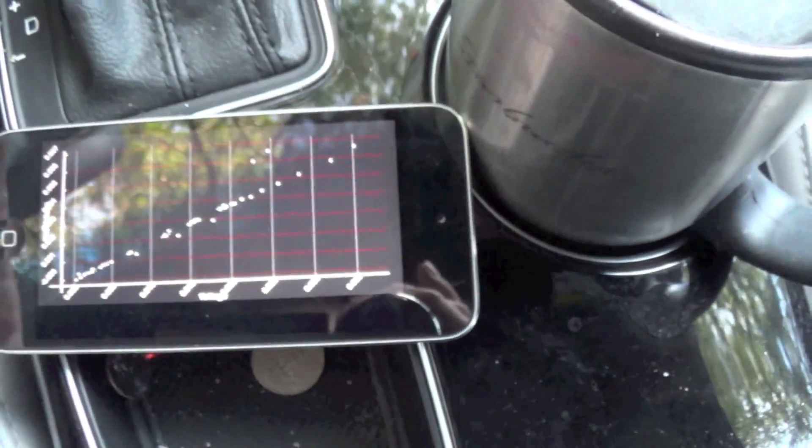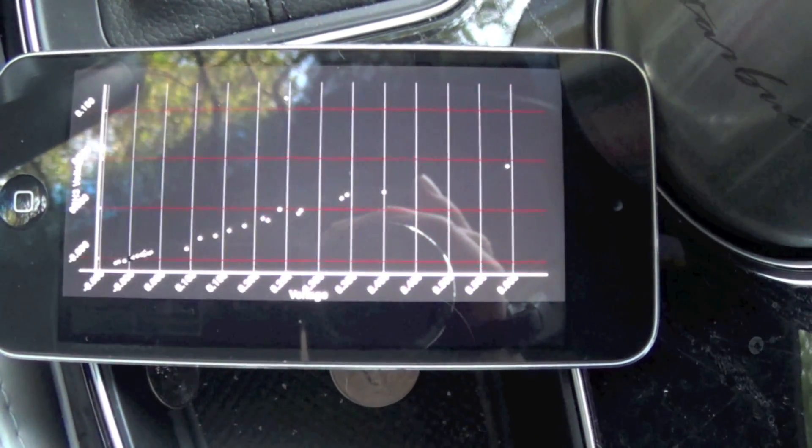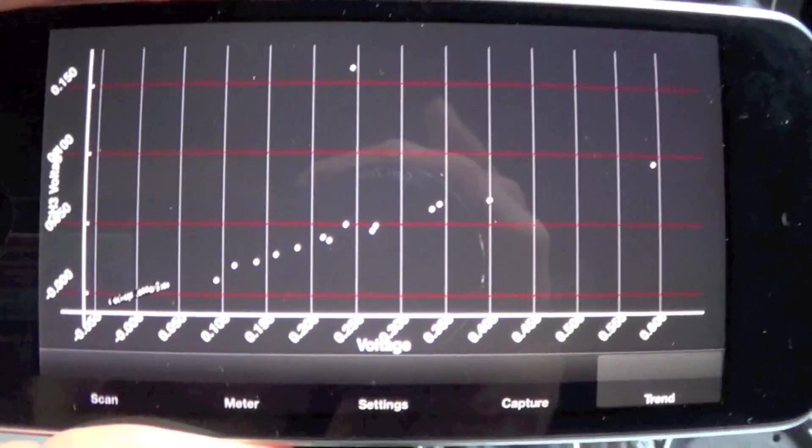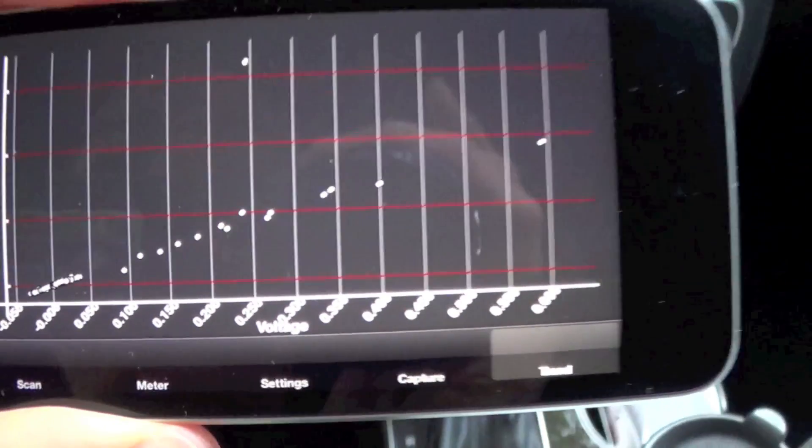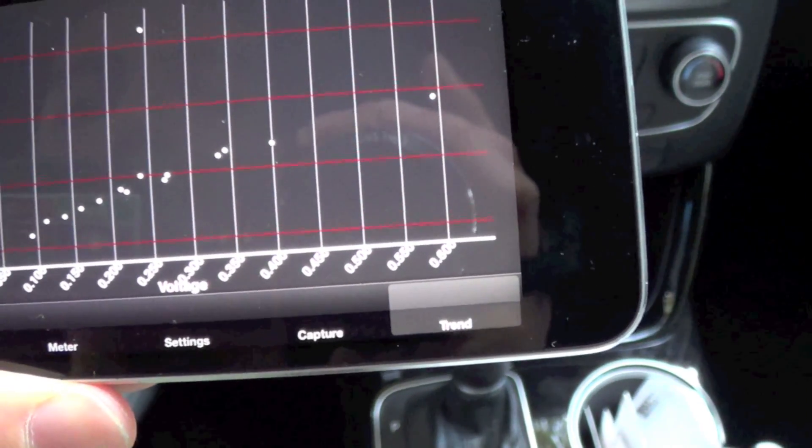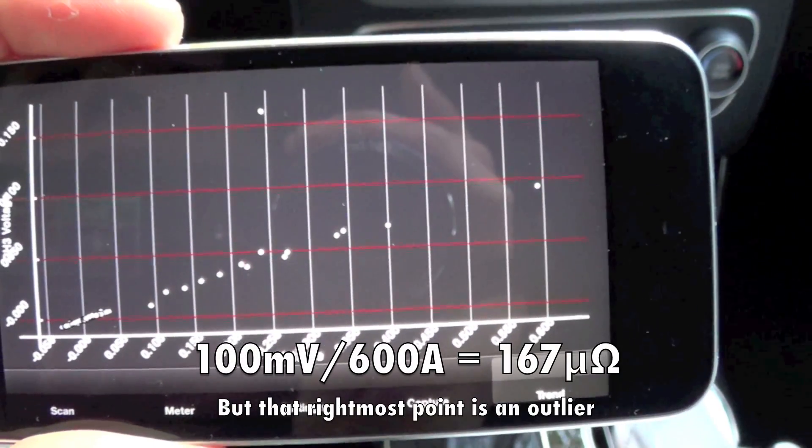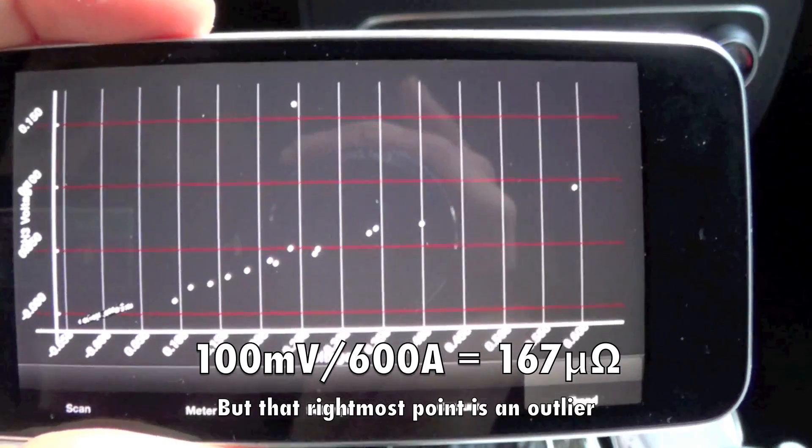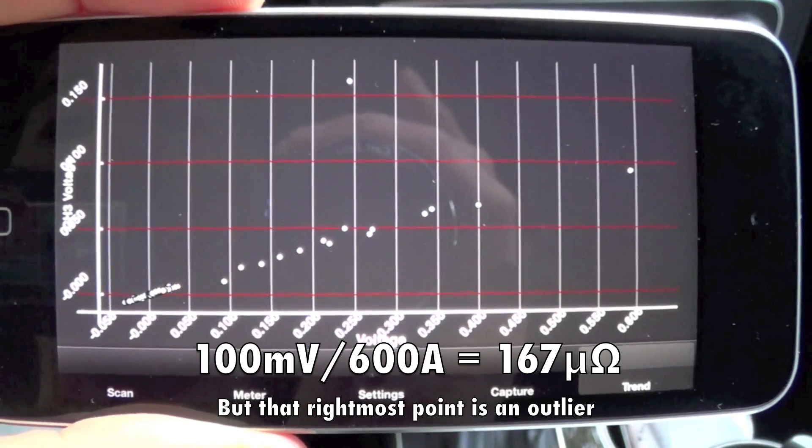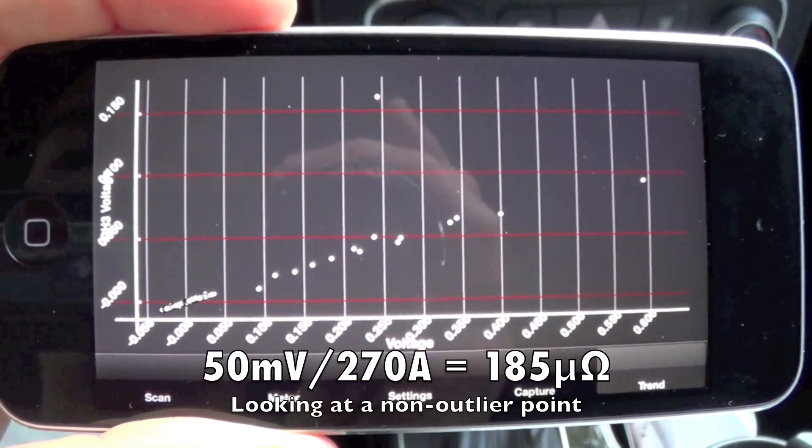Let's keep capturing and just see if that holds for a whole startup transient. So I just turned the engine on, and that gave us a 100 millivolt drop across the shunt for a 600 amp current. So that would come out to just a little bit under 200 micro-ohms for that shunt.